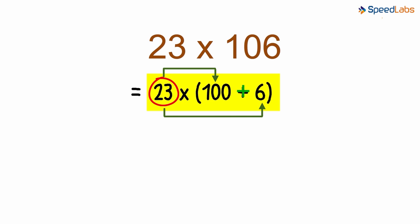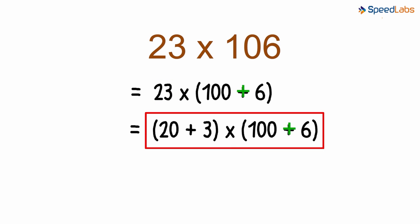Can we make it simpler? Yes we can. The number twenty-three can be written as twenty plus three. And the problem can now be expressed like this. Observe this carefully. We have a problem with two sets of brackets this time.